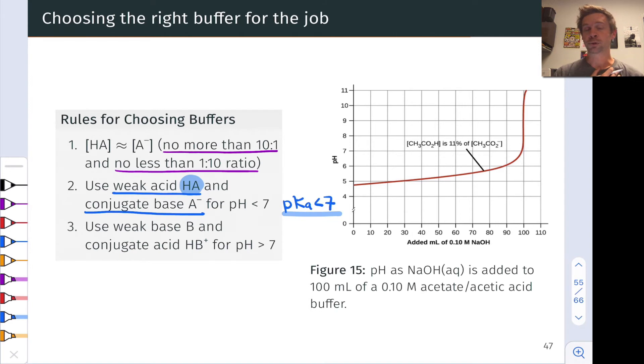If we want a buffer whose pH is greater than 7, then we should think about a conjugate acid in the buffer with pKa greater than 7, and a weak base B. We could think about it as the pKa of HB⁺ is greater than 7, or the pKb of B is less than 7. By the conjugate seesaw, that's two different ways of saying the same thing.